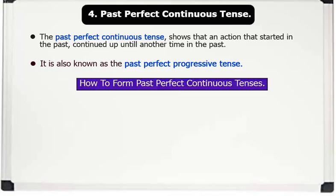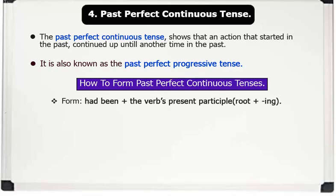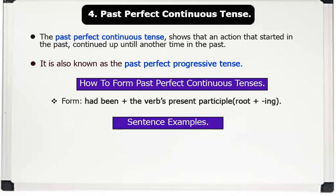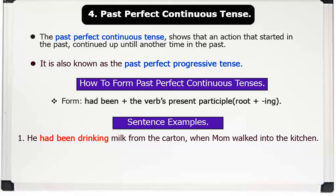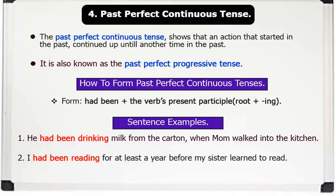How to form past perfect continuous tense. Formula: had been + the verb's present participle (root + -ING). Sentence examples. 1. He had been drinking milk from the carton when mom walked into the kitchen. 2. I had been reading for at least a year before my sister learned to read.